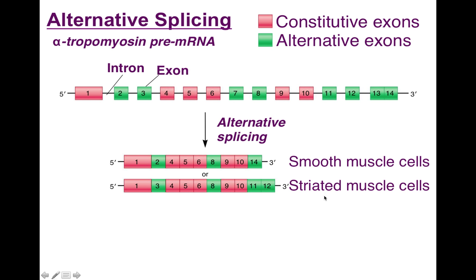A different pattern of splicing occurs for the alpha-tropomyosin messenger RNA in striated muscles. The conserved exons are present — 1, 4, 5, 6, 9, and 10 — but the alternate exons are different. Instead of exon 2, we have exon 3. We still retain exon 8 in this version, but instead of exon 14, there are exons 11 and 12.